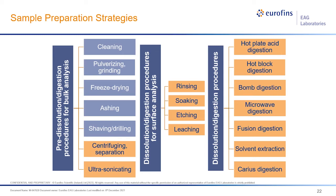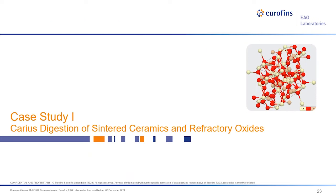ICP techniques are considered among the most accurate and precise analytical techniques, not only within Eurofins EAG's toolbox, but throughout the world of analytical chemistry. The following case studies include examples of different sample preparation strategies, ranging from the 1860s-developed carrier's tube approach to more recent microwave digestion-based ones. This first example is a well-established method of closed vessel digestion developed by our Eindhoven team, based on the approach originally developed by George Carrius in 1860, and still used today — a testament to its elegant design.